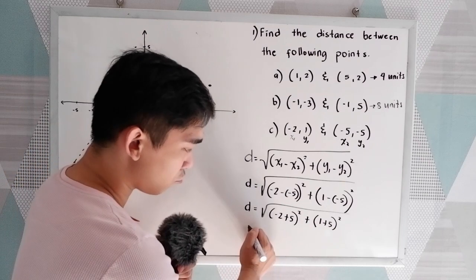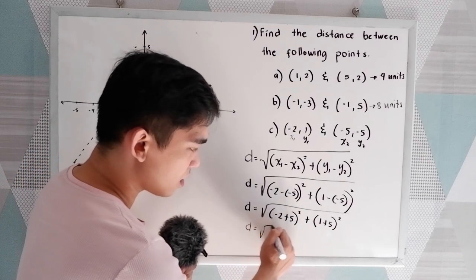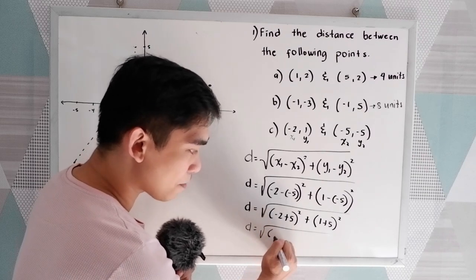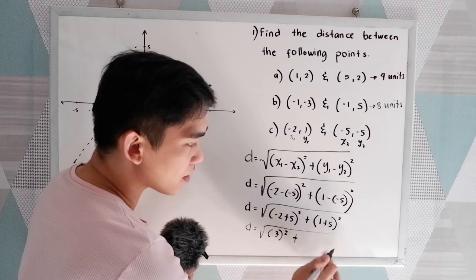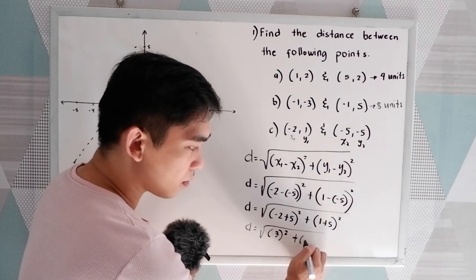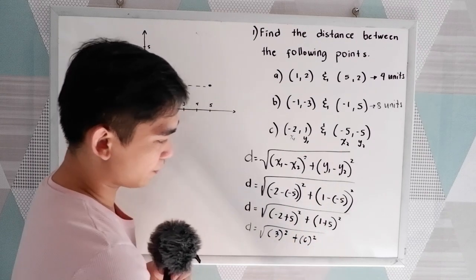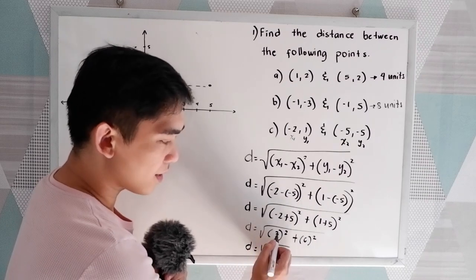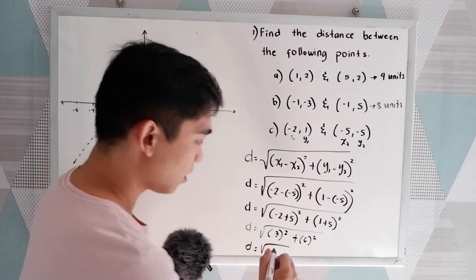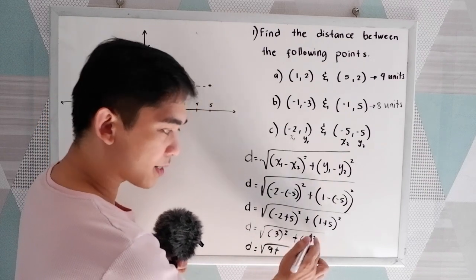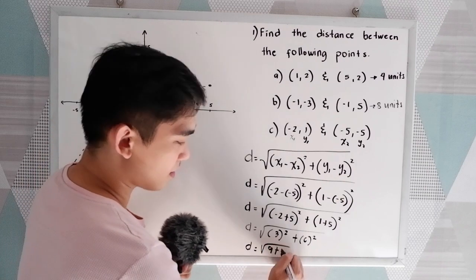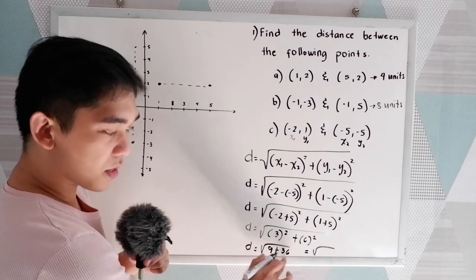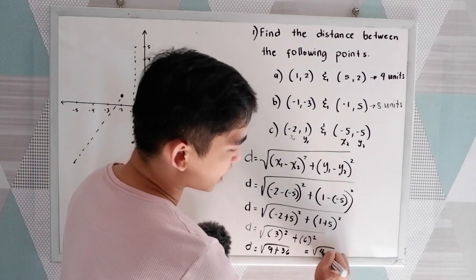Simplifying: we have d equals the square root of negative 2 plus 5, that is positive 3, raised to 2, plus 1 plus 5, that is 6, raised to 2. So d equals the square root of 3 squared — that is 3 times 3, which is 9 — plus 6 squared, that is 6 times 6, which is 36. That equals the square root of 9 plus 36, which is 45.